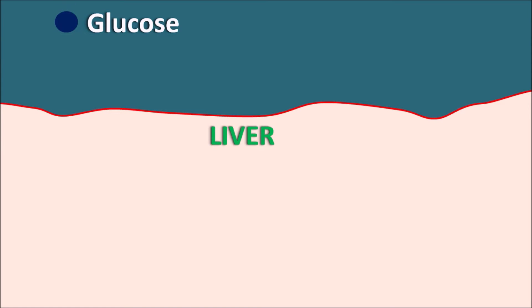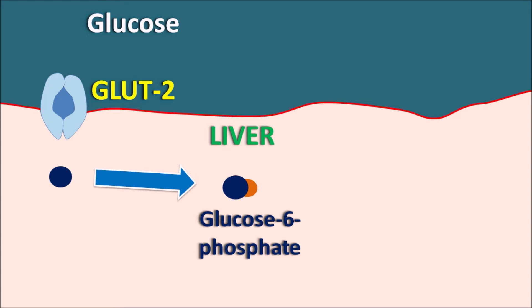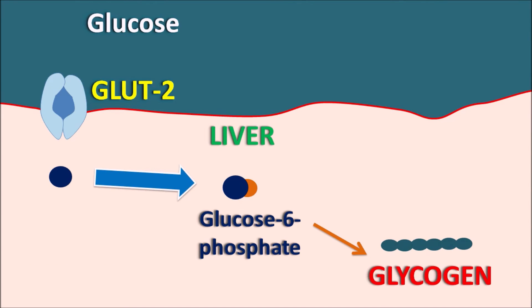Now let us see the uptake of glucose into the liver. On liver cells, GLUT2 receptors are present through which glucose is absorbed. Once glucose enters liver cells, it is converted to glucose-6-phosphate by the enzyme hexokinase. This glucose-6-phosphate can then be converted into glycogen, which is the storage form of glucose. Alternatively, it can be converted into fatty acids and triglycerides, then into VLDL, which is released from the hepatic cells. So glucose is stored as glycogen or converted into triglycerides in the liver, and GLUT2 receptors mediate its absorption.